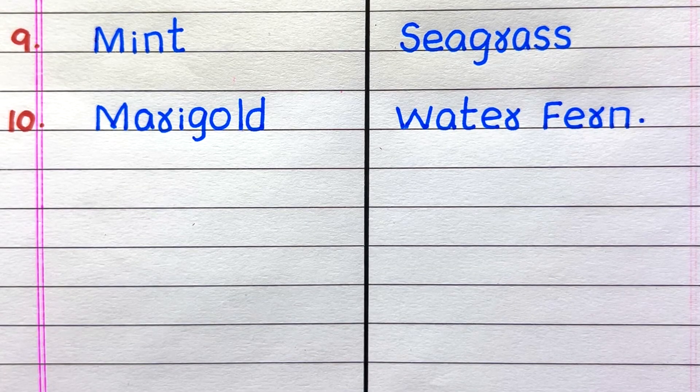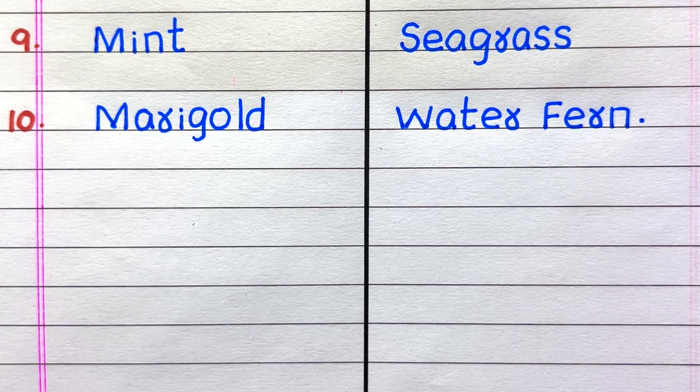9th name of a water plant is seagrass. 10th one is water fern.